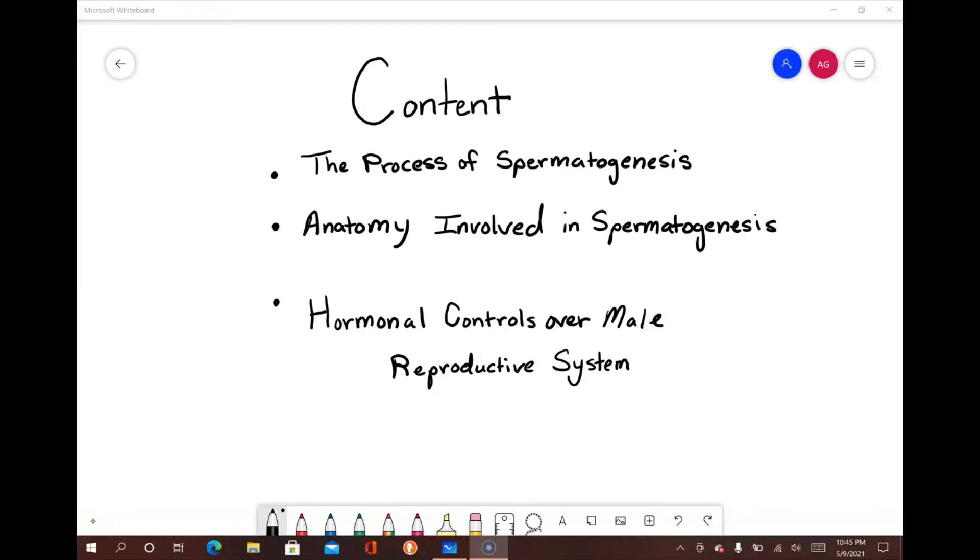Human physiology covers a range of organ systems, each with a specific set of complex processes to carry out certain functions within the body. However, it's important to keep in mind that all the different systems work together to allow an organism to survive, function, grow, and reproduce. The male reproductive system is a great example of exactly this.